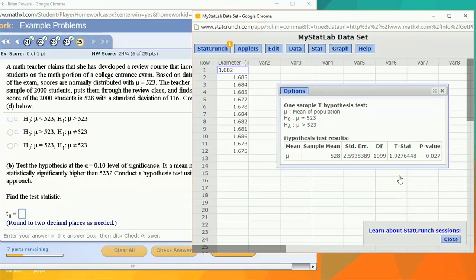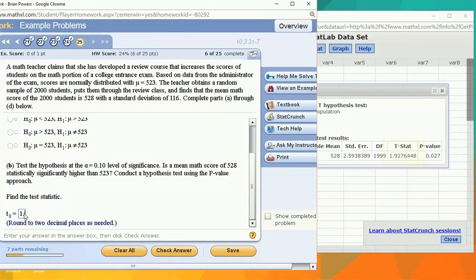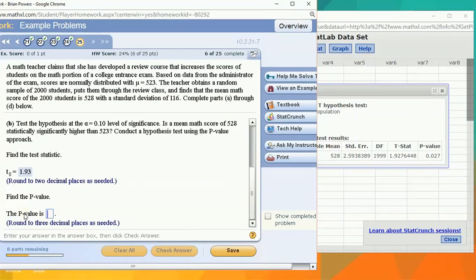Well we get a t-stat of 1.927. Two decimal places, that would be 1.93. The p-value, 0.027.